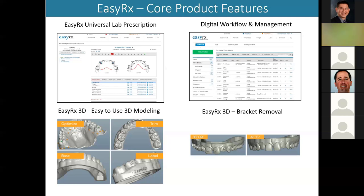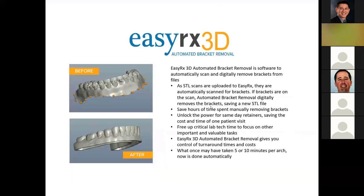Based on customer demand and the way the industry has been progressing, we developed our EZRx3D software to help with optimization, trimming, basing, and labeling files that can be sent easily to your 3D printer. We've also released a bracket removal module that allows you to digitally remove brackets off the model so you could provide same-day D-band delivery of retainers. Just within the last few months, we've also released an automated bracket removal module - both manual and automated versions will be covered today.